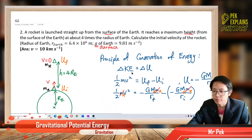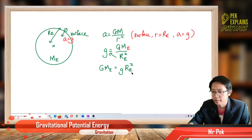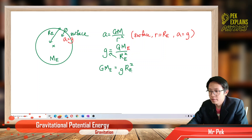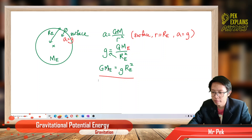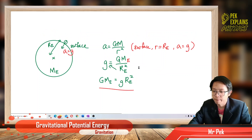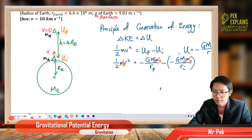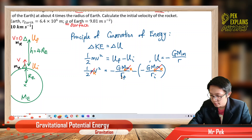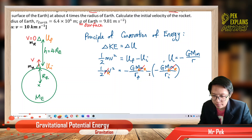So GM_e equals g R_e². Now we can substitute GM with g R_e² in our energy equation. Before substituting, we need to identify r_final and r_initial, and rearrange the equation.